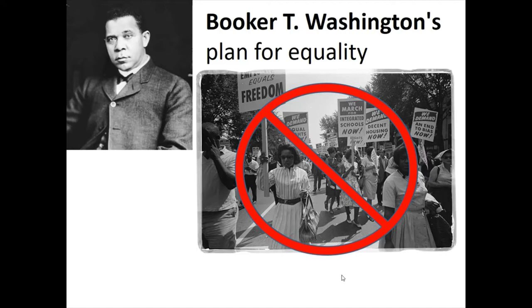Underneath, secretly, he helped finance many protests. He helped finance many court cases. He did a lot to support the politically active, but we don't know about that because he could not let it be seen. He said in confidence that if he wanted to start a race war, he had the power to be politically active and start one the very next day. But he knew that wasn't going to help the cause, and that went against his plan for education, economic gain, and eventually proving the natural equality of blacks and whites so that the law would have to reflect what was actually happening.